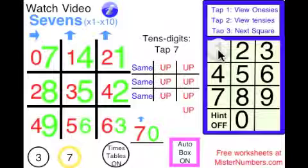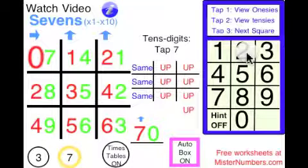You can look at the ones digit pattern. 0, 1, 2, 2, 3, 4, 4, 5, 6, 7.